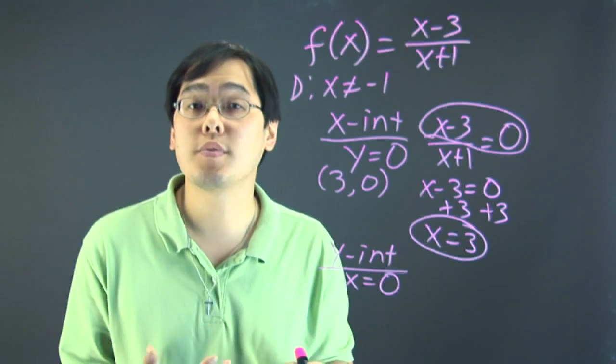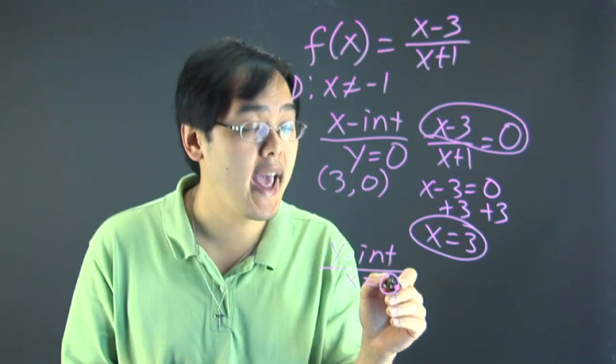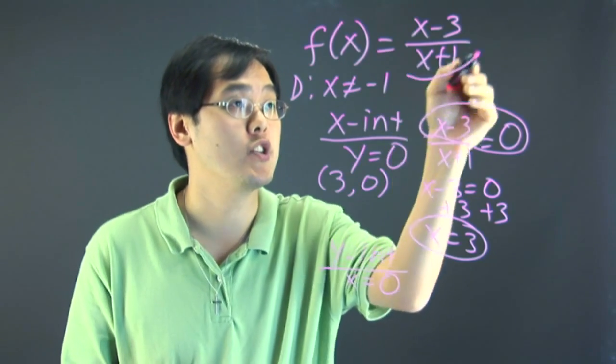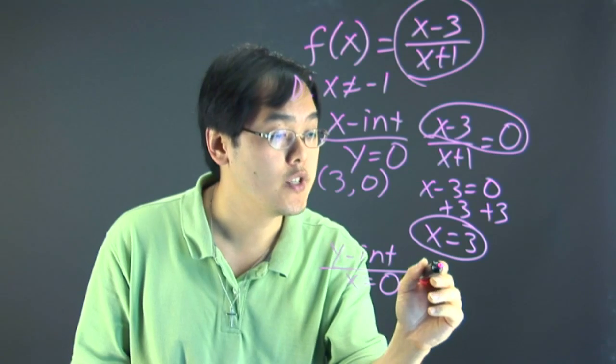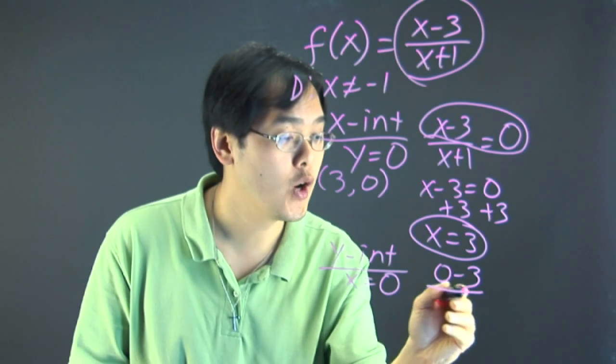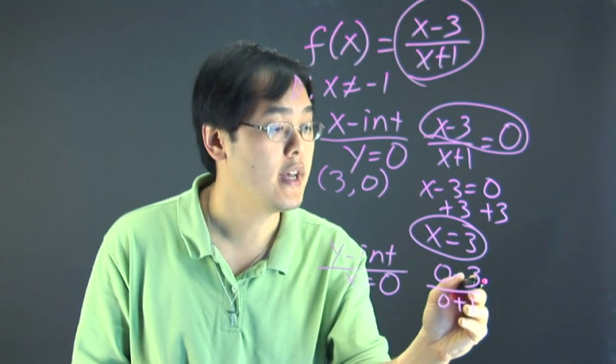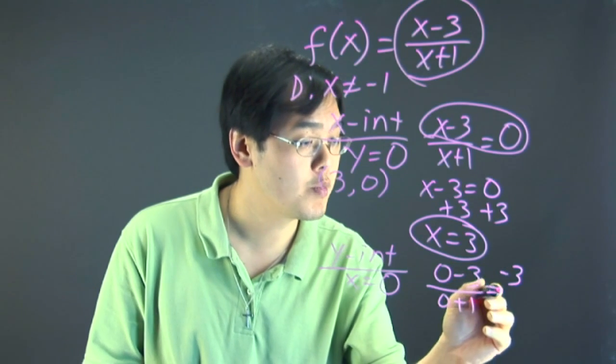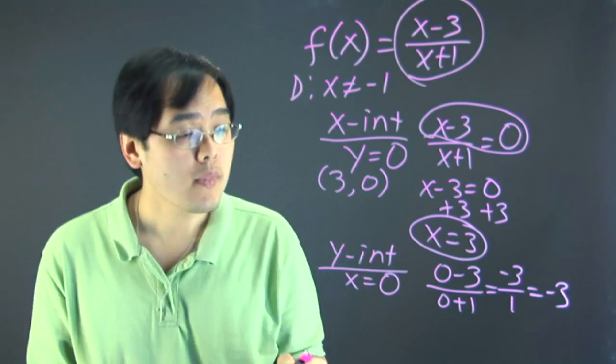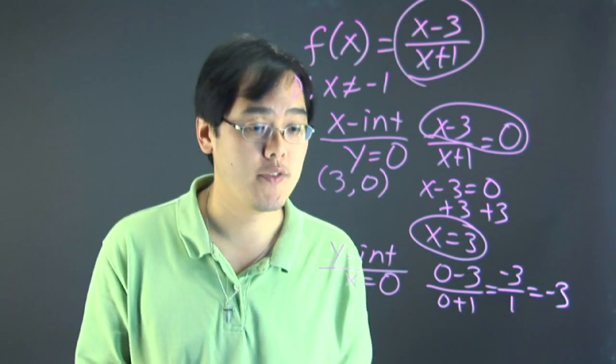So that means you let x be zero. So you have zero minus three over zero plus one and zero minus three is negative three. Zero plus one is one. So that means the y intercept is negative three.